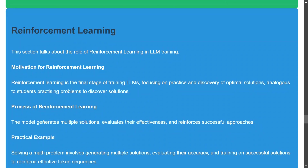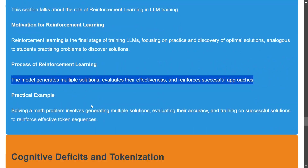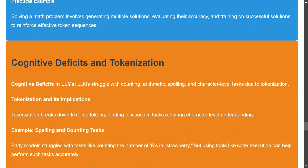Reinforcement learning is the final stage of LLM training — after pre-training and post-training. RL focuses on discovering optimal solutions: the model generates multiple solutions, evaluates their effectiveness, and reinforces successful approaches. In RL, the model takes an action, gets a reward, and adjusts its behavior depending on that reward.